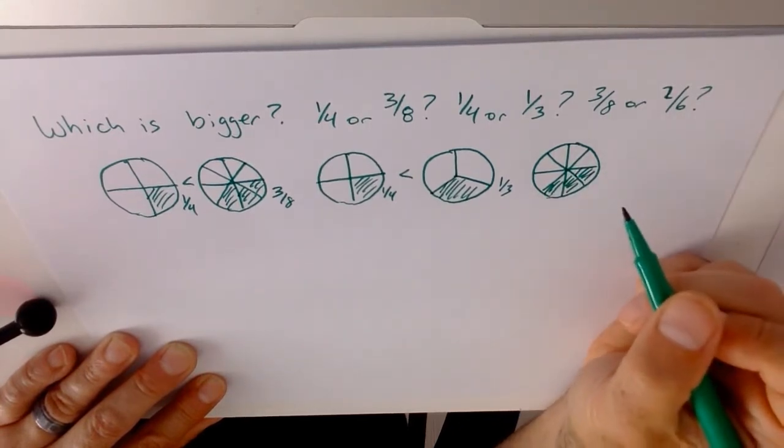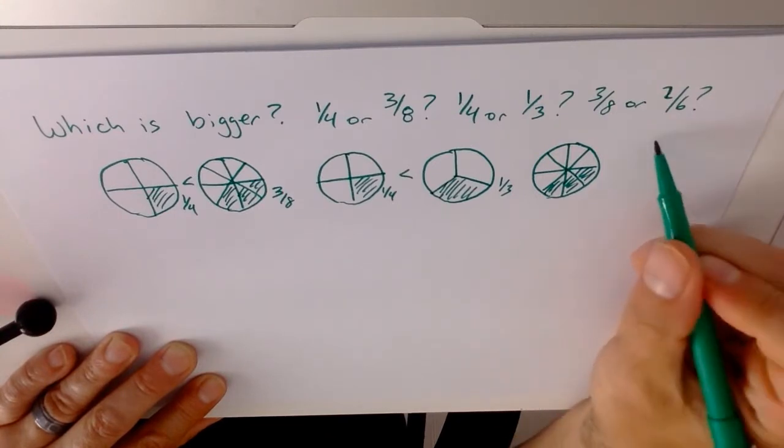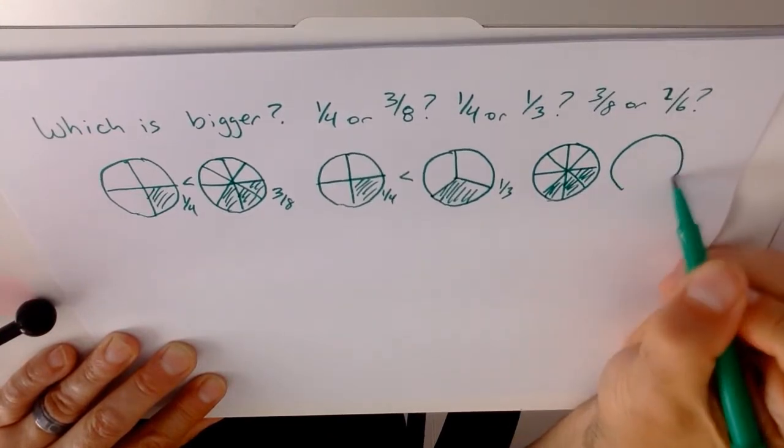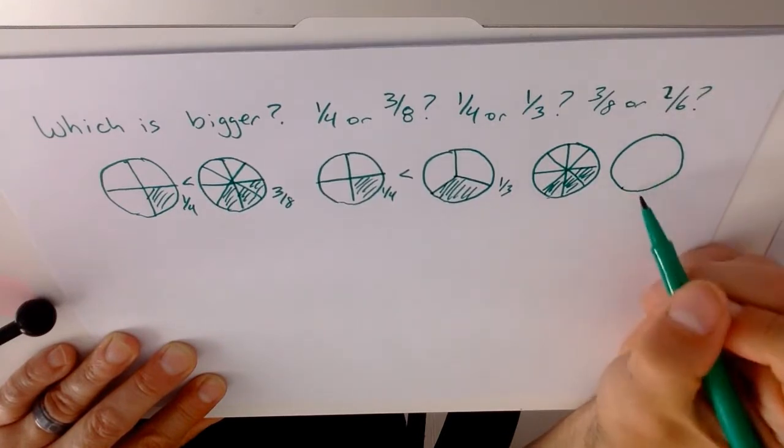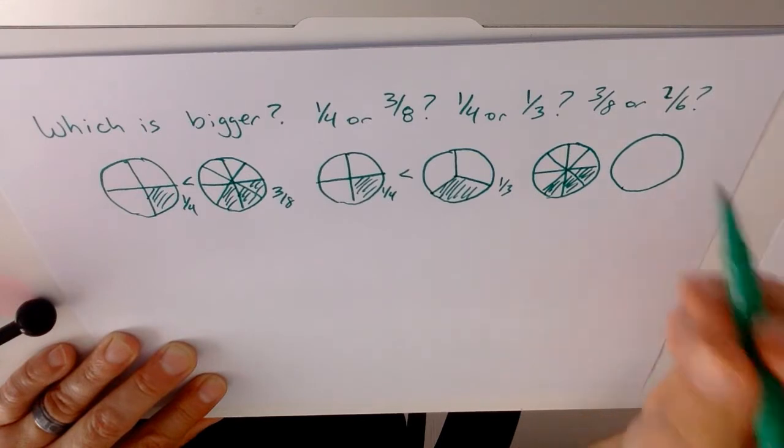And 2 sixths. Well, that's a little bit tougher to draw. Because what we're saying is, okay, well, they'll draw the quarters, and then split the quarters.